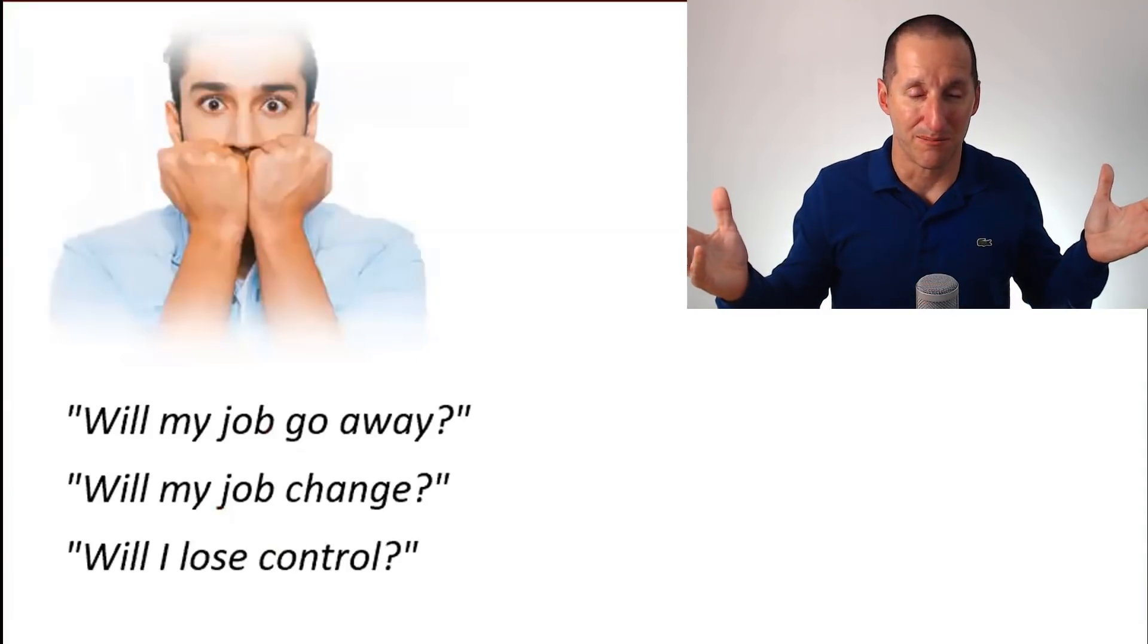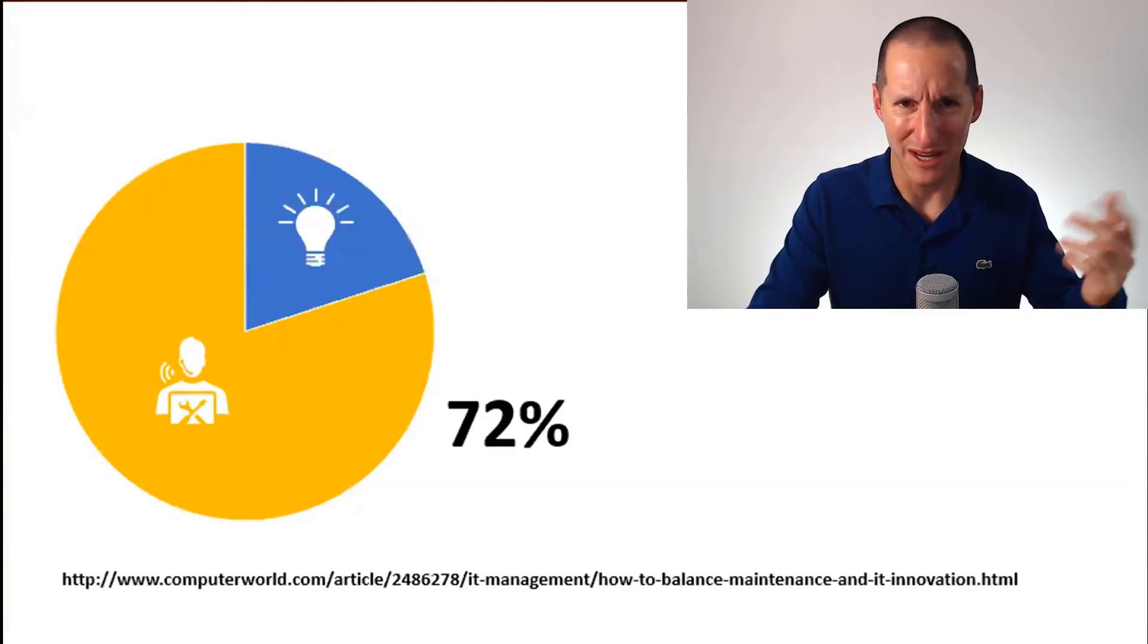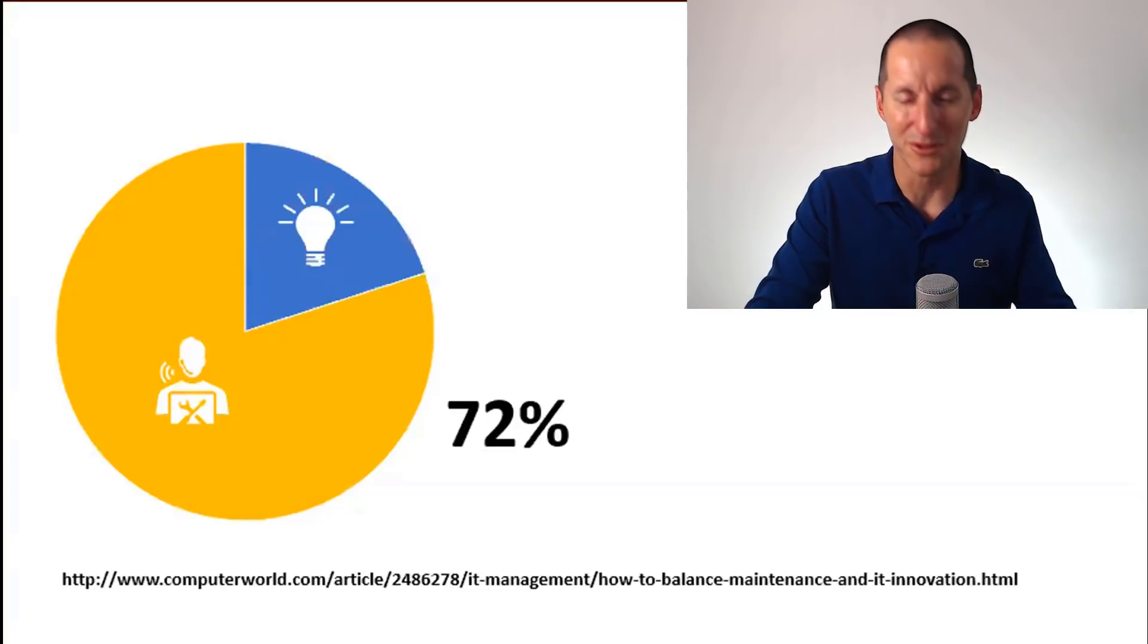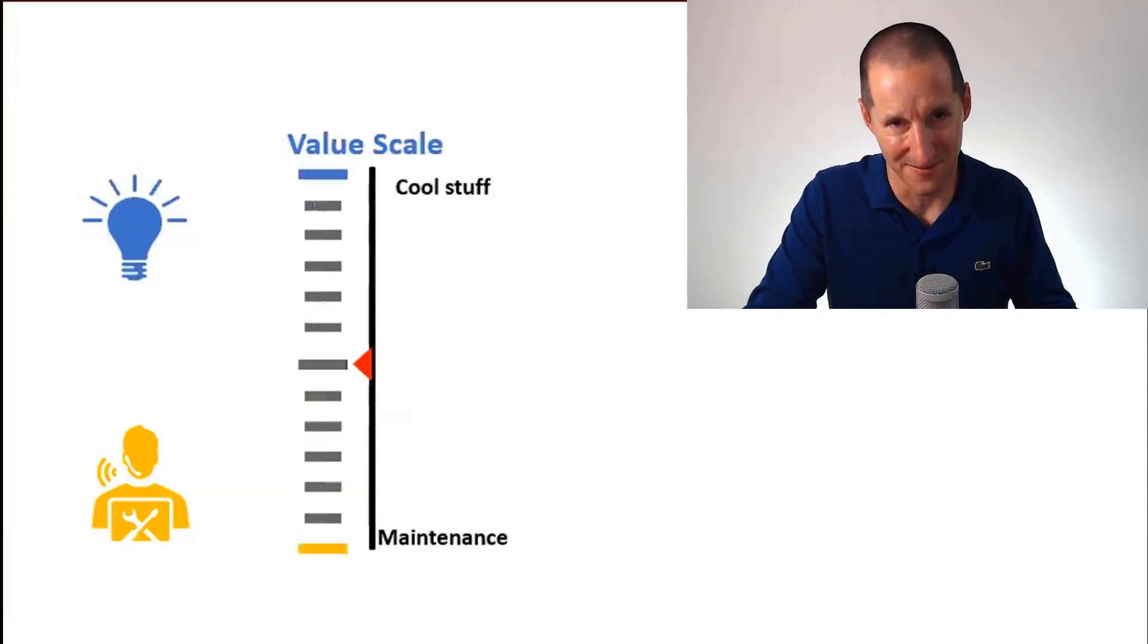As with all good office hours sessions we have to have a pie chart. This pie chart I simply stole from Computer World which says that 72 percent of technical tasks in an IT department, and DBA is a part of that, are maintenance and only 28 percent are innovation. So the theory behind autonomous database, like autonomous undo, is we remove the dull stuff and let you focus on the cool stuff.